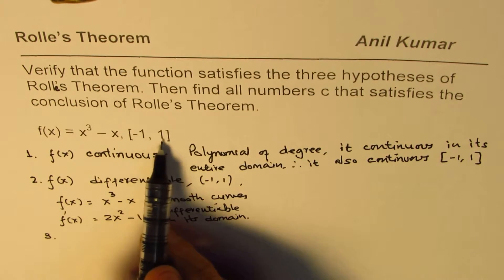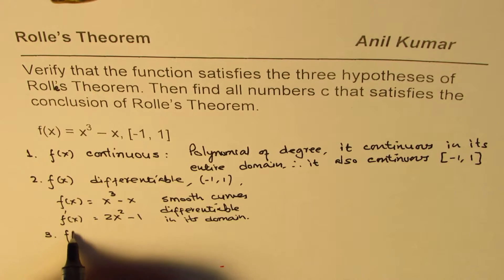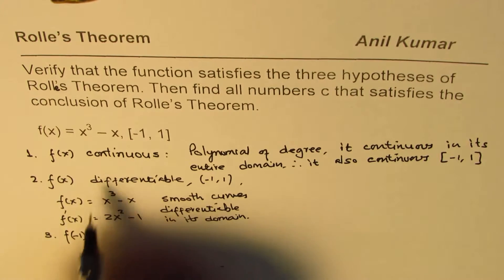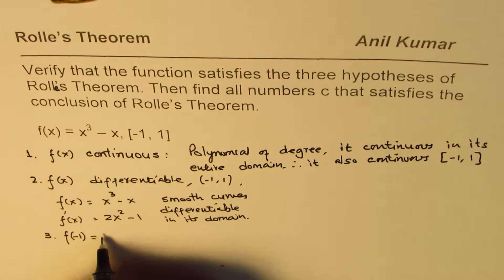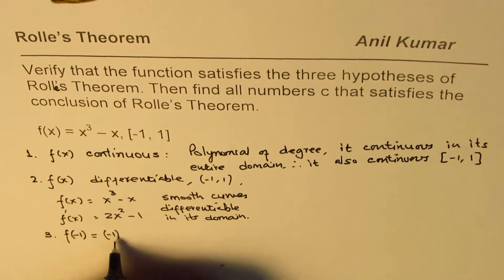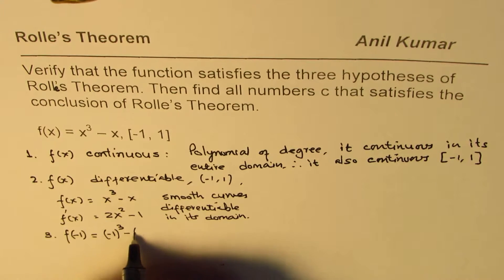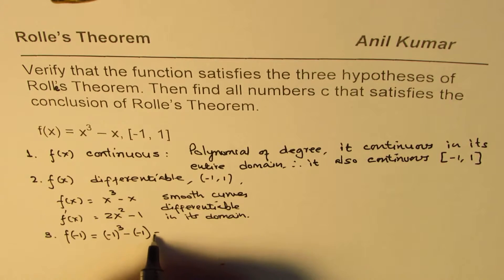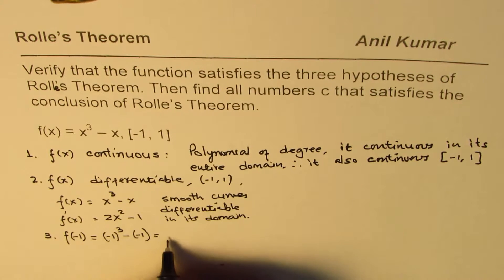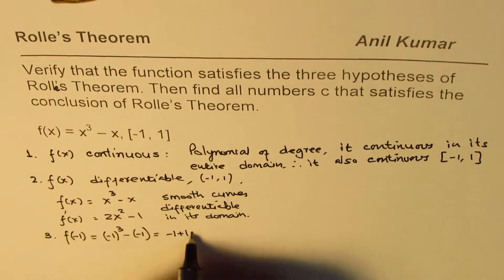So let's find what is f(-1). If I substitute -1 here I get (-1)³ - (-1) and that gives me -1 + 1 which is 0.